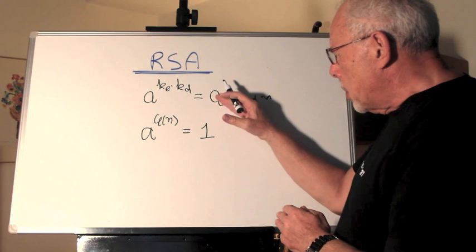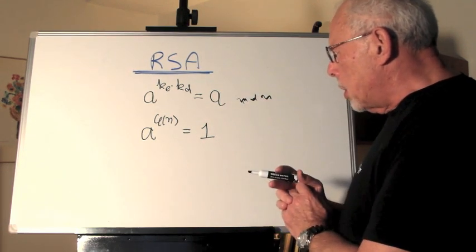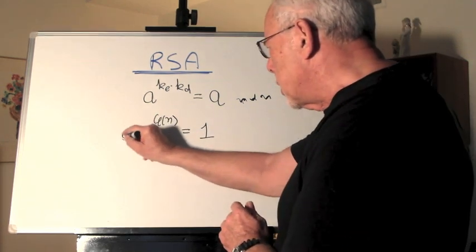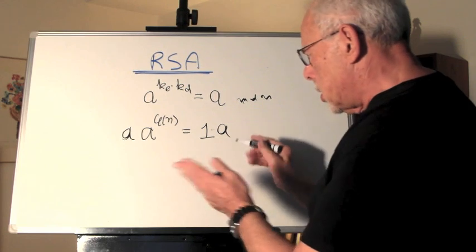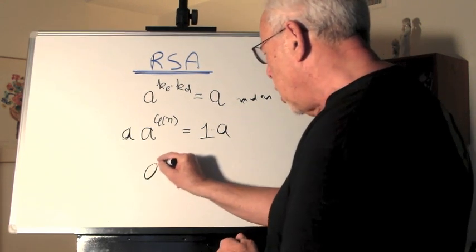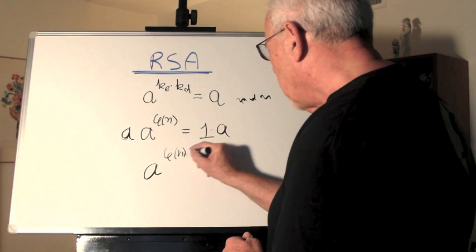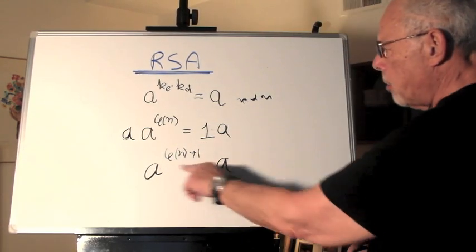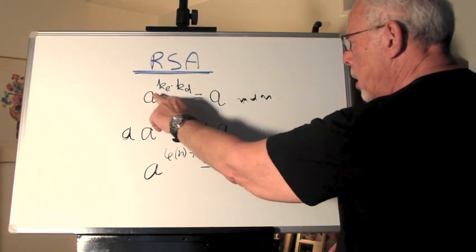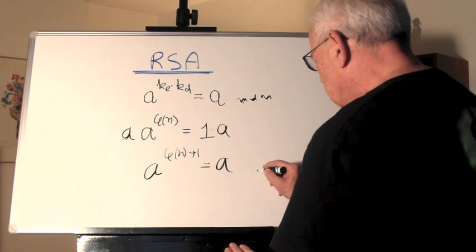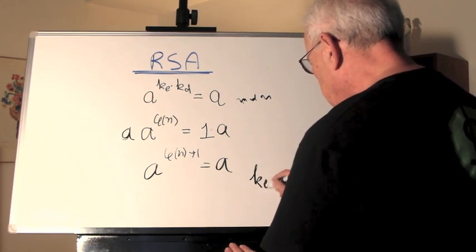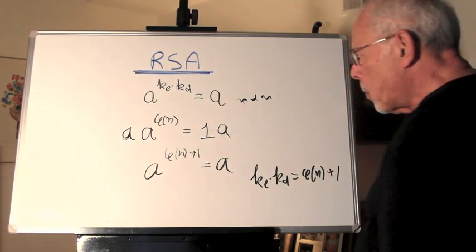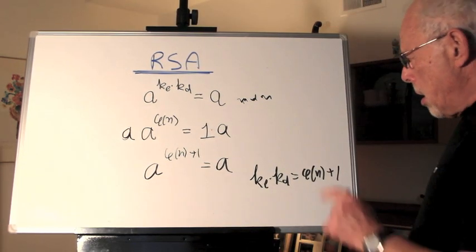And we have the Euler formula. It looks very similar, but to make it more similar, we may want to multiply this by A and this side by A, which is the same. So, we get A to the power of phi N plus 1 equals A. So, now this looks the same as that. And it appears that all that we have to do is find KE and KD such that they will be phi N plus 1.